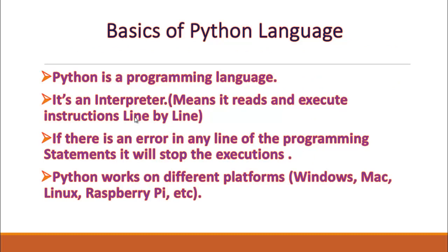Python is an interpreter. Interpreter means it reads and executes instructions line by line. It will pick one instruction and execute it. For example, if there is an error in any line of a programming statement, it will stop execution on the spot.